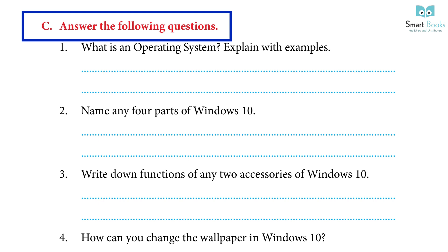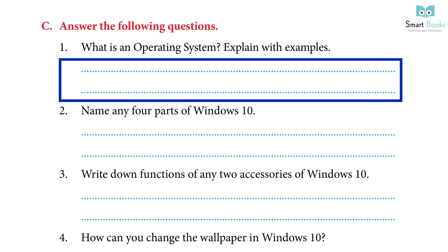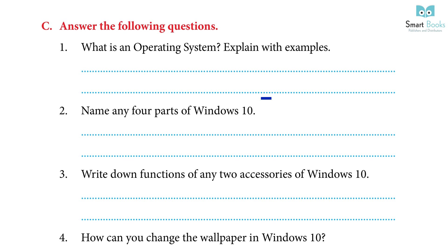C. Answer the following questions. Question 1: What is an operating system? Explain with examples. Answer: The ability of a computer to carry out all of its functions depends on a unique set of programs. These special sets of programs are known as the operating system (OS). An operating system is a software that helps us to work on a computer system. It is the most important part of the computer system. Examples: Linux, GNOME, Mac, Android, and Microsoft Windows.